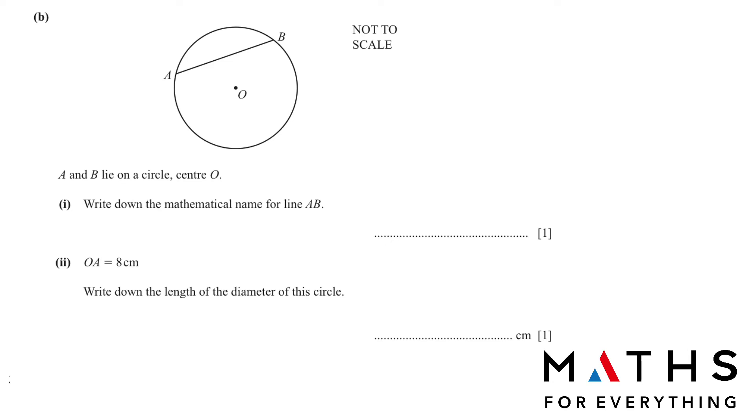Question number 2b. A and B lie on a circle center O. So this is the point A and B. Write down the mathematical name for line AB. If we have two points and they are joined together with a line and it does not pass from the center, then that is called a chord.